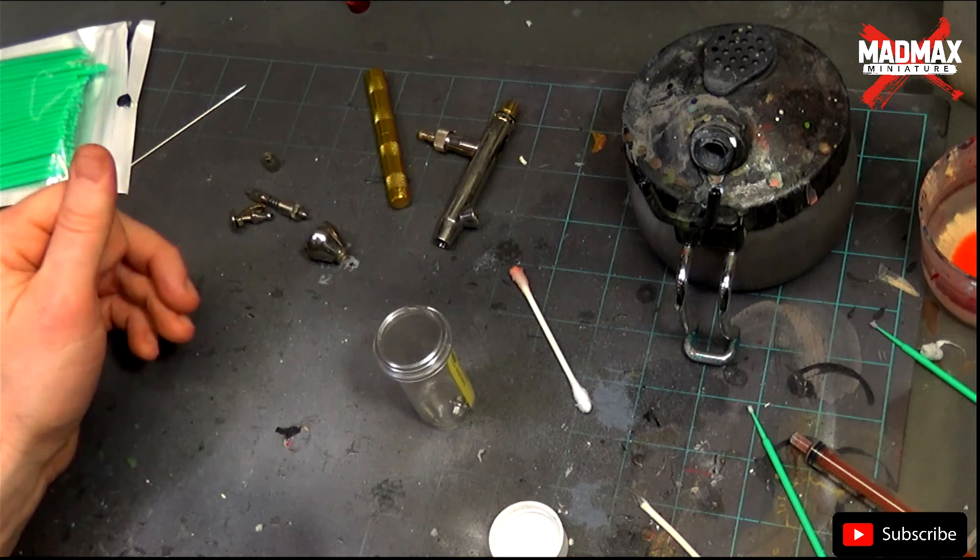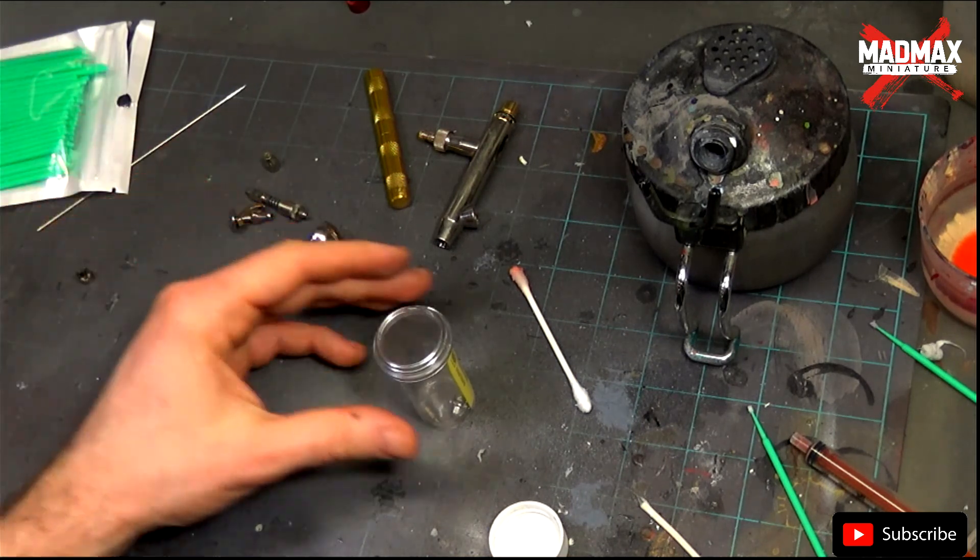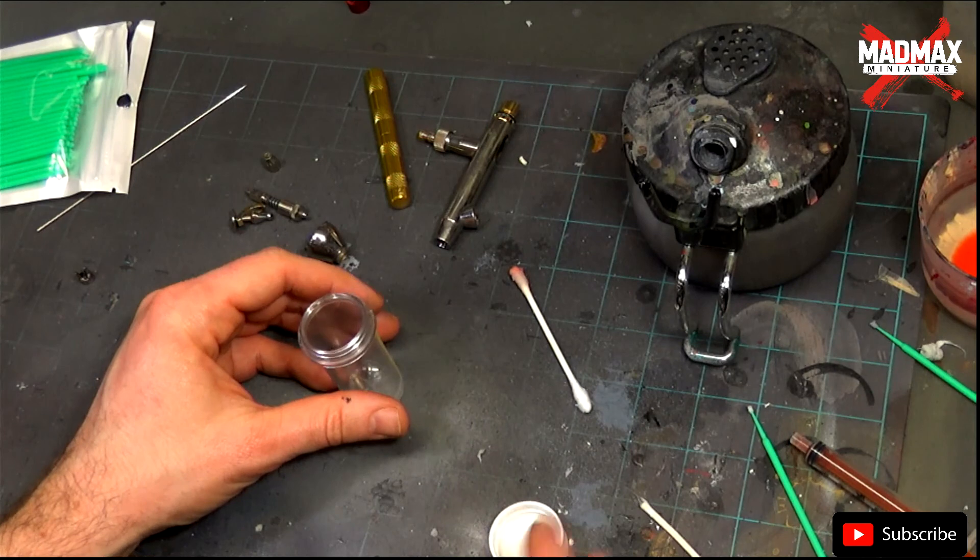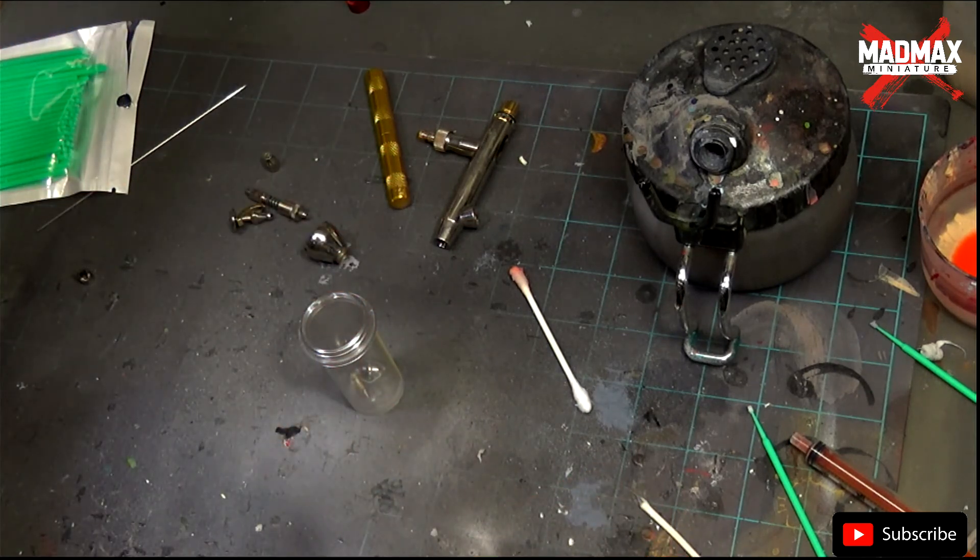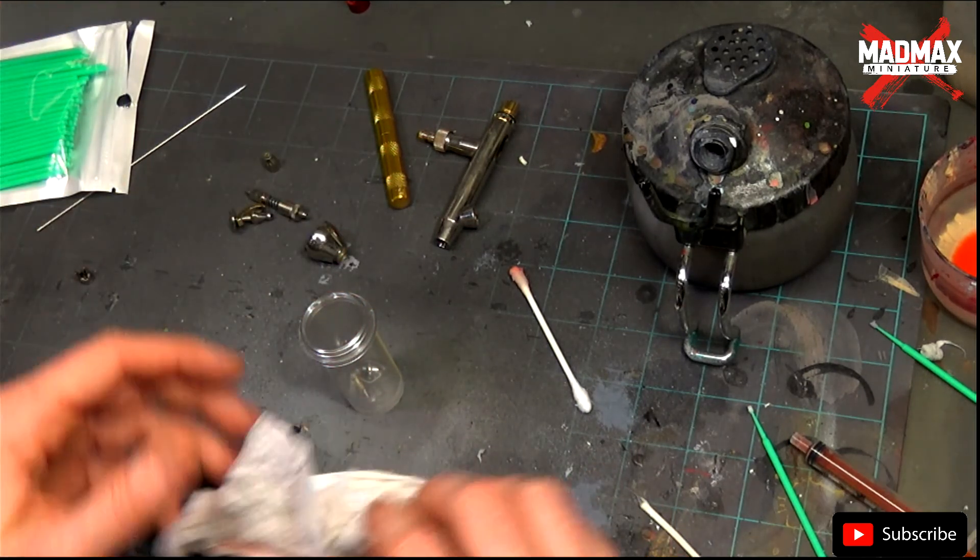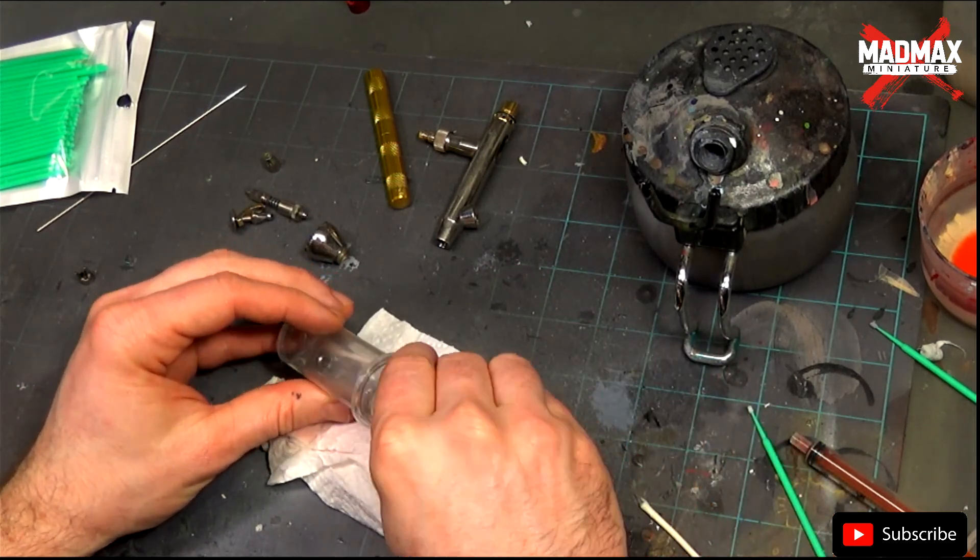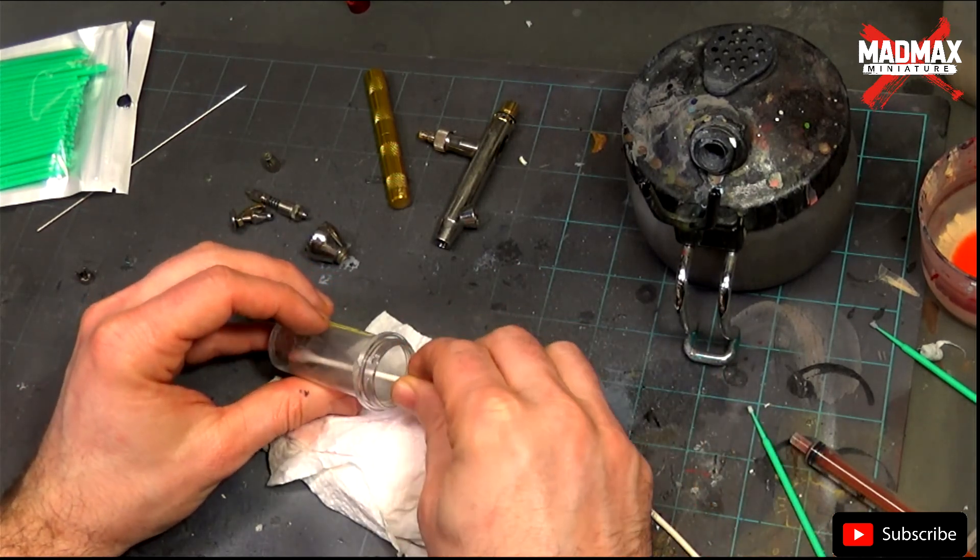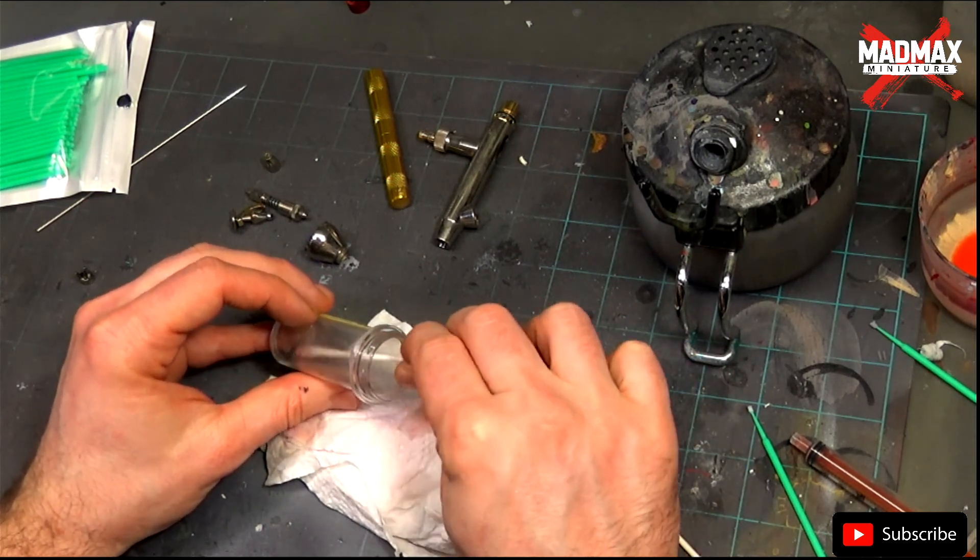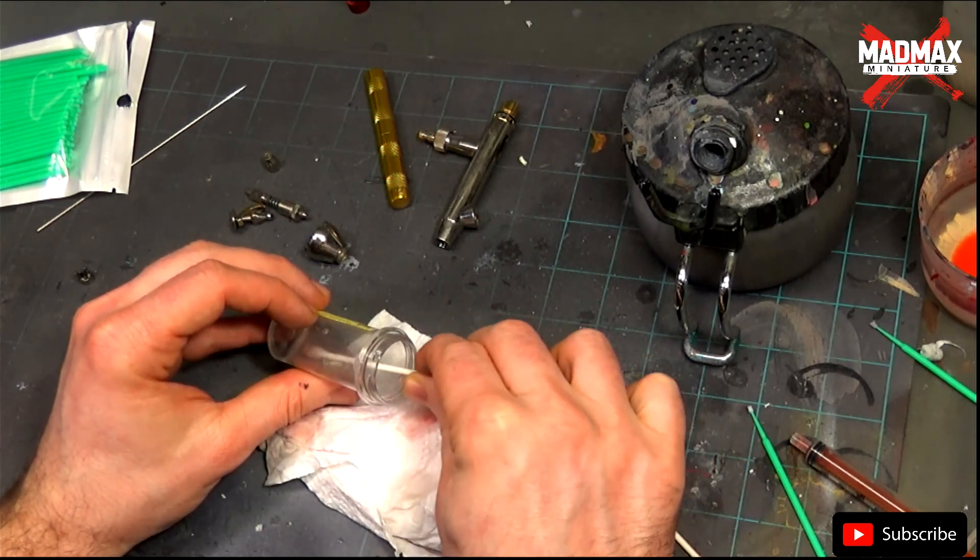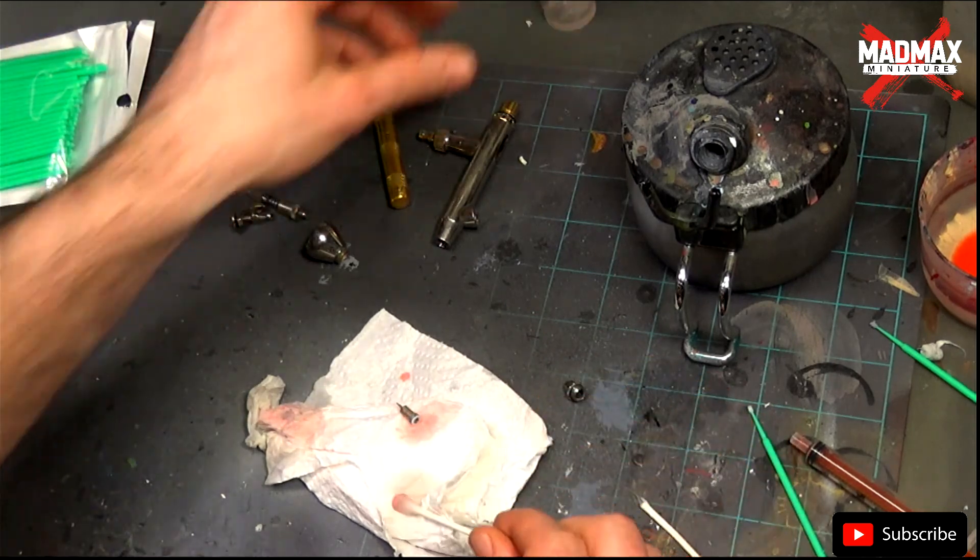If you have an airbrush that has rubber seals you can try to get them off your airbrush before soaking the pieces. Let's finish the cleanup of the nozzle as it has been soaking in the airbrush cleaner for a while.